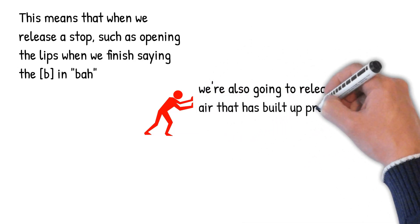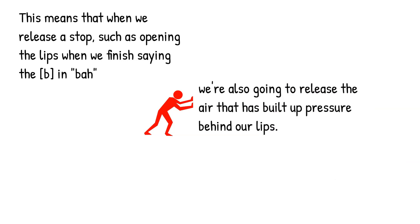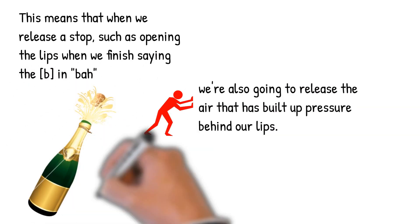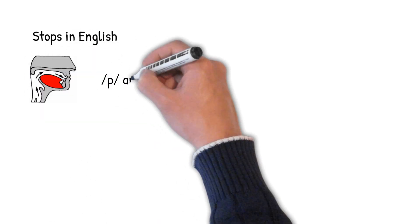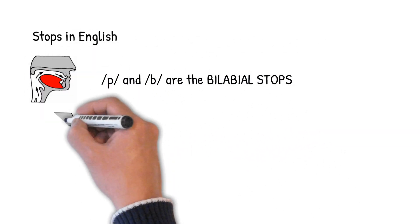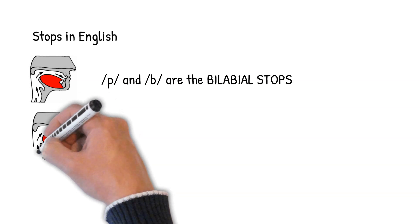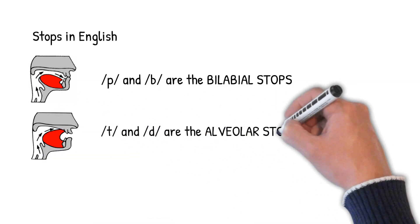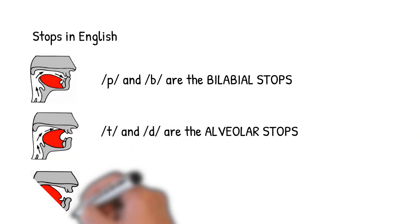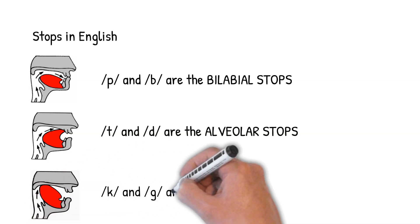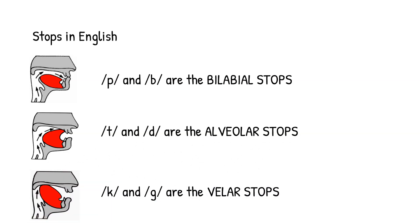That release is going to cause a burst of air to come out of our mouth, much like the pressure that builds up behind a cork and causes it to pop when we loosen it. In English, we make stops at three places of articulation: P and B are the bilabial stops, T and D are the alveolar stops, and K and G are the velar stops.